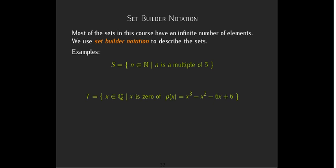So here's another example of set builder notation. It's telling us that the elements are going to belong to the rational numbers. And they must be zeros of this polynomial.